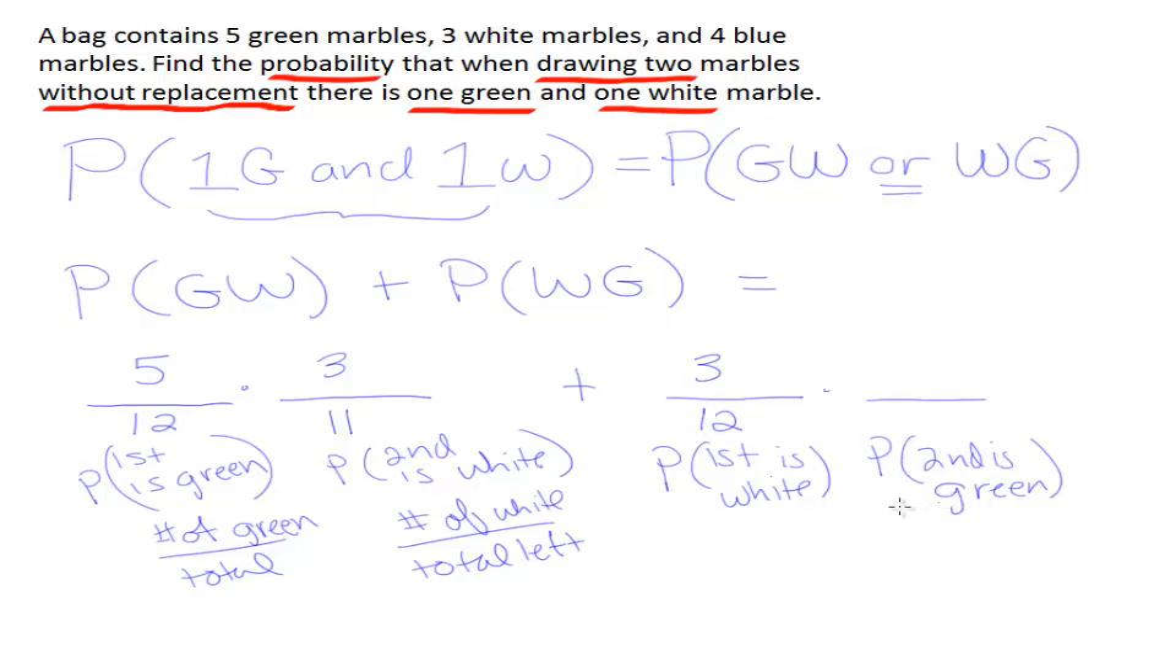It would be the second is green, number of green over total left. How many green marbles are there? There are five marbles at that point, because we haven't taken a green marble yet. Five green ones. How many total marbles left? Only eleven left, because we took out a marble initially. That marble was a white marble.